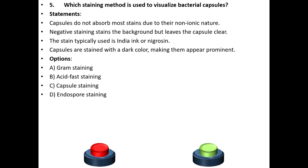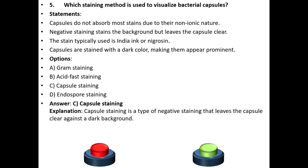Options: A. Gram staining. B. Acid-fast staining. C. Capsule staining. D. Endospore staining. The answer is C, capsule staining. Explanation: Capsule staining is a type of negative staining that leaves the capsule clear against a dark background.